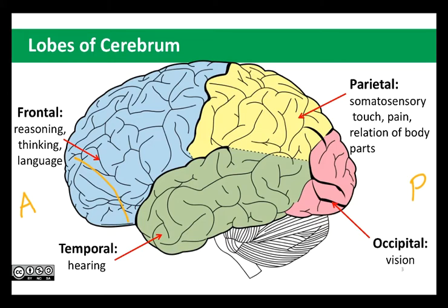The parietal lobes are primarily concerned with what's referred to as somatosensory information. Soma means body, so you've got sensations of the body — representation of touch, pain, and how our different body parts are related to one another. Representation of motor areas are actually at the very back of the frontal lobe. The occipital lobe is essentially where we see. Our eyes are the organs of sensation, but we don't perceive anything visually without the occipital lobe. And then finally we have the temporal lobe, which is around your temples, and it's primarily associated with hearing.